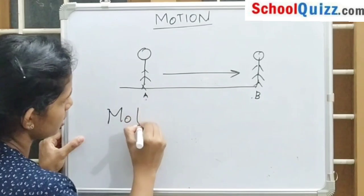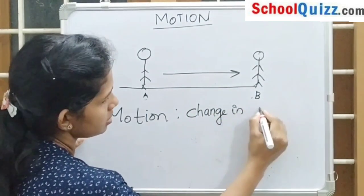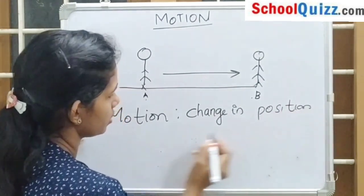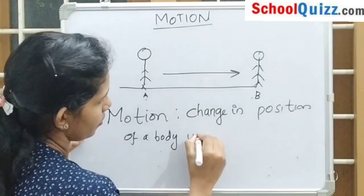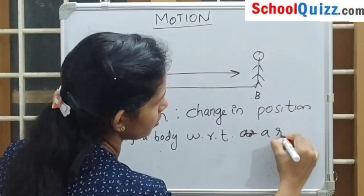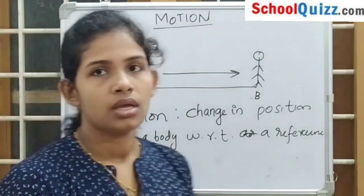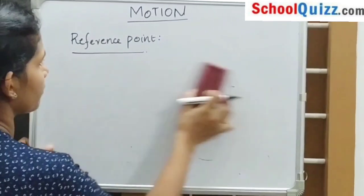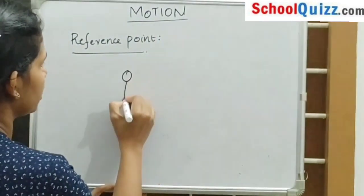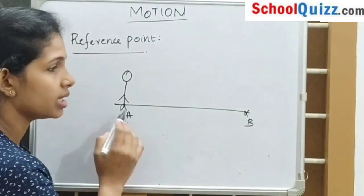Motion is the changing position of a body with respect to a reference point. So what is a reference point? It is a fixed point about which motion takes place. Consider an example: if a man starts his journey from point A to B, then point A is the starting point of the journey. So we can say that it is a reference point.